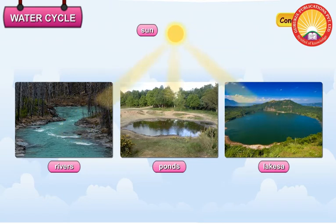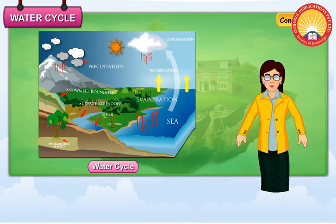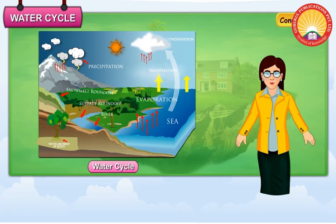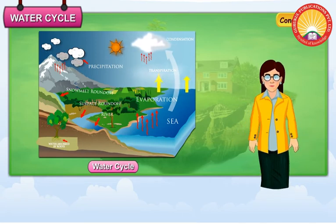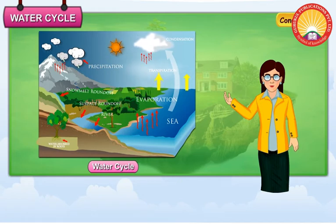When the sun shines, water from rivers, ponds, lakes, and oceans heats up and rises in the form of water vapour. High up in the sky, this water vapour comes in contact with cold air. It cools down to form tiny drops of water. These tiny drops cling together to form clouds.